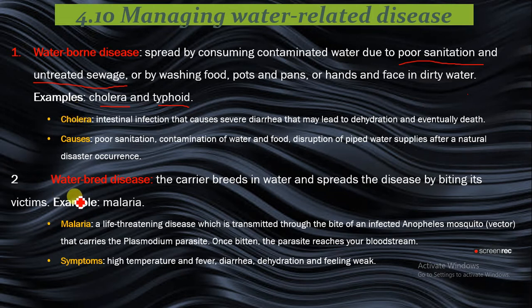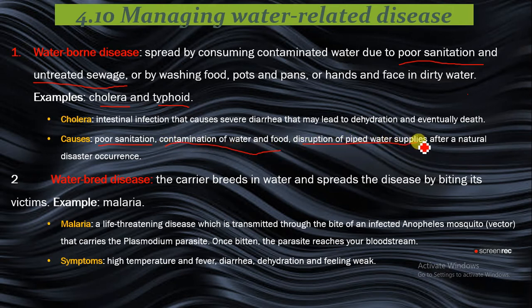You just need to know that it's an intestinal infection that causes severe diarrhea that may lead to dehydration and eventual death. Causes include poor sanitation, contamination of water and food, and disruption of pipe and water supplies after a natural disaster, which can lead to development of the bacteria Vibrio cholerae.